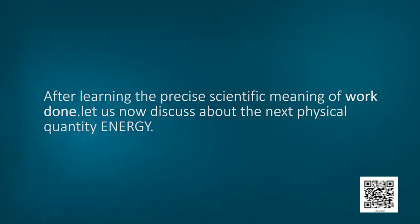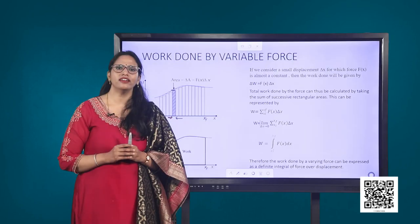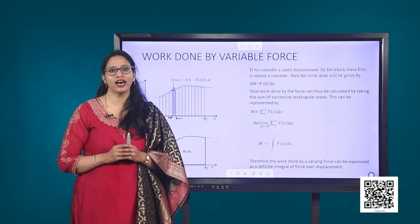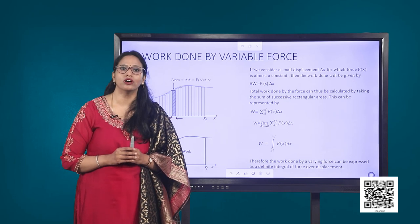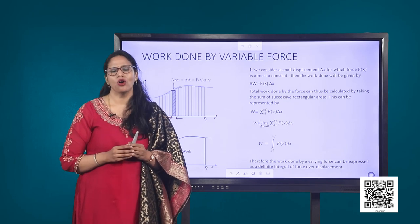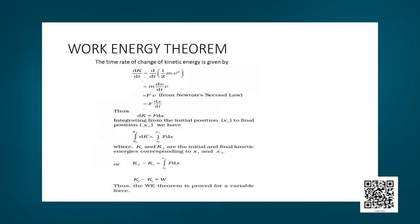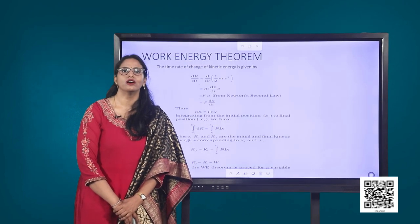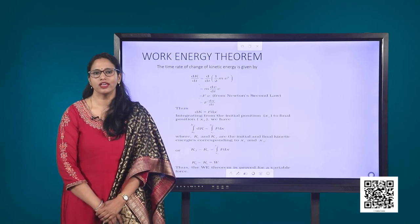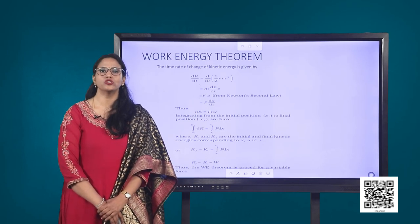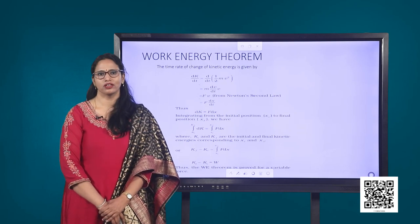After learning the precise scientific meaning of work done, let us now discuss the next physical quantity: energy. Energy is defined as the capacity to do work. In order to do work one needs energy, or work is done at the expense of energy. Work and energy are related to each other using the work-energy theorem. According to this theorem, work done by a force acting on a body is equal to the change produced in the kinetic energy of the body.